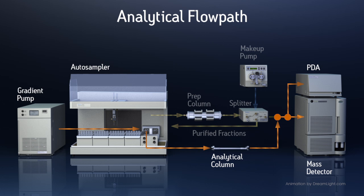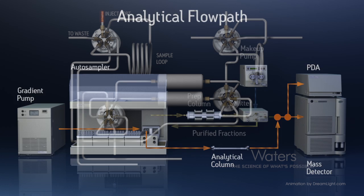When flowing analytically, the alternative flow path does not pass through the splitter, but instead flows directly to the detectors.